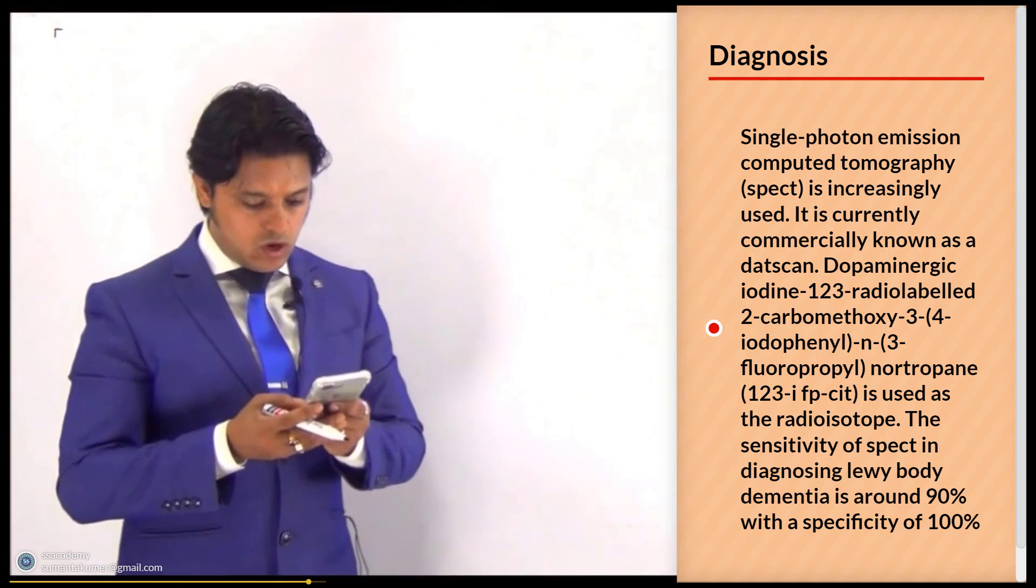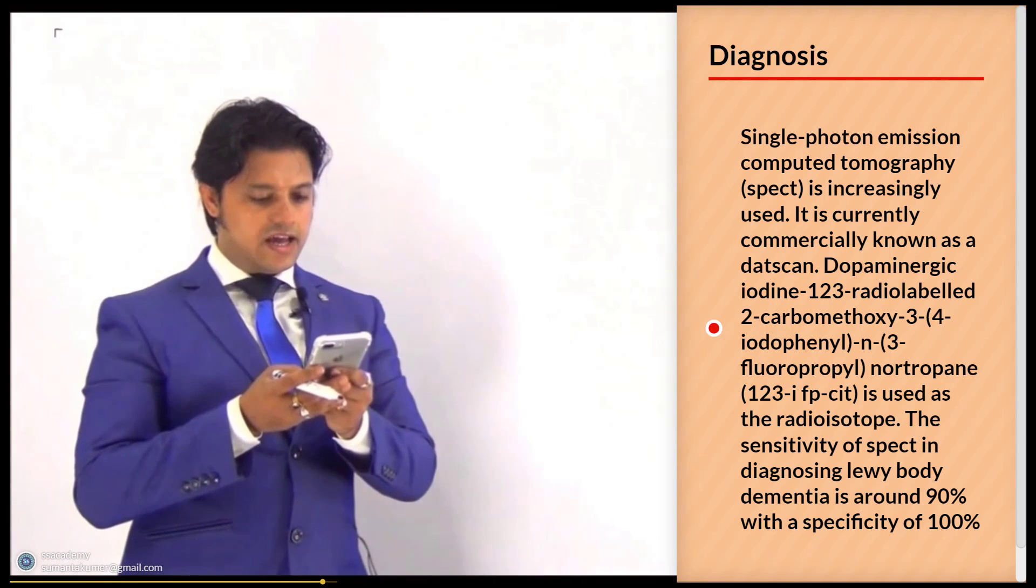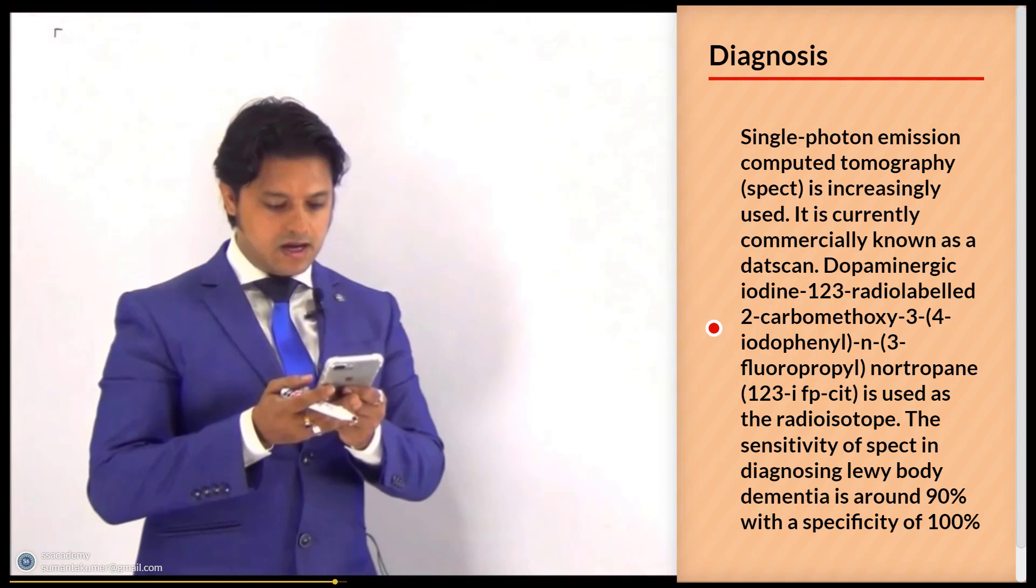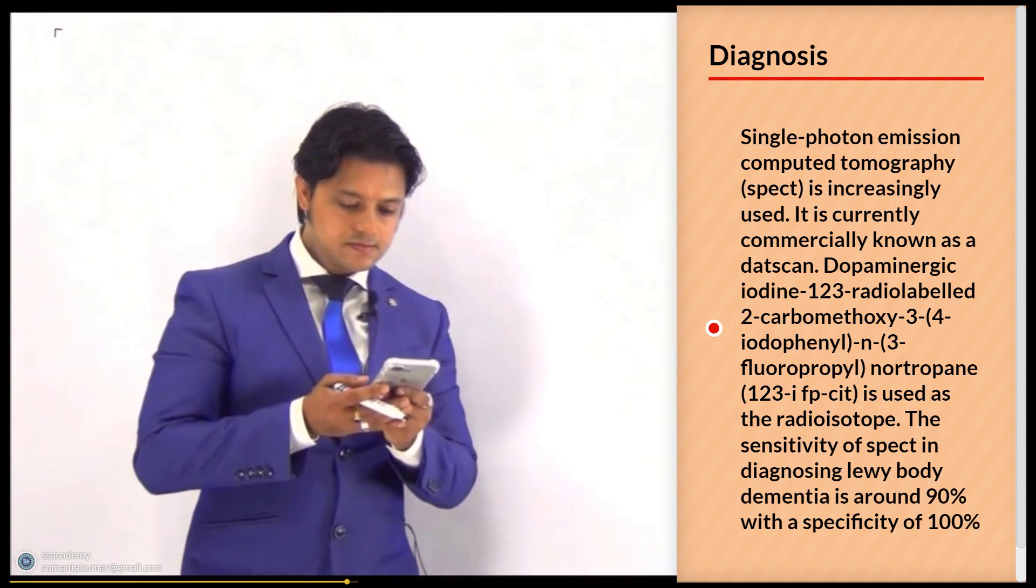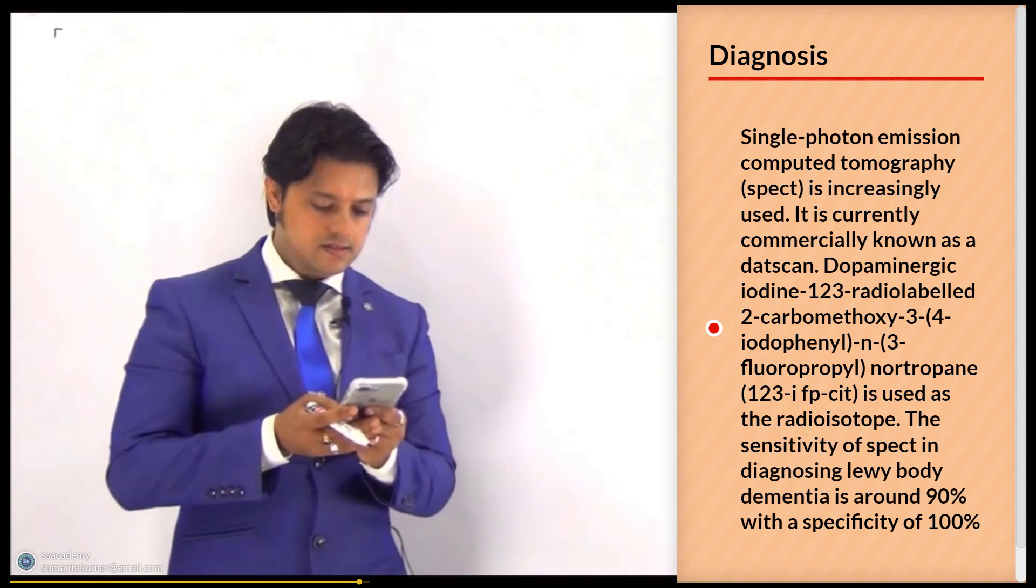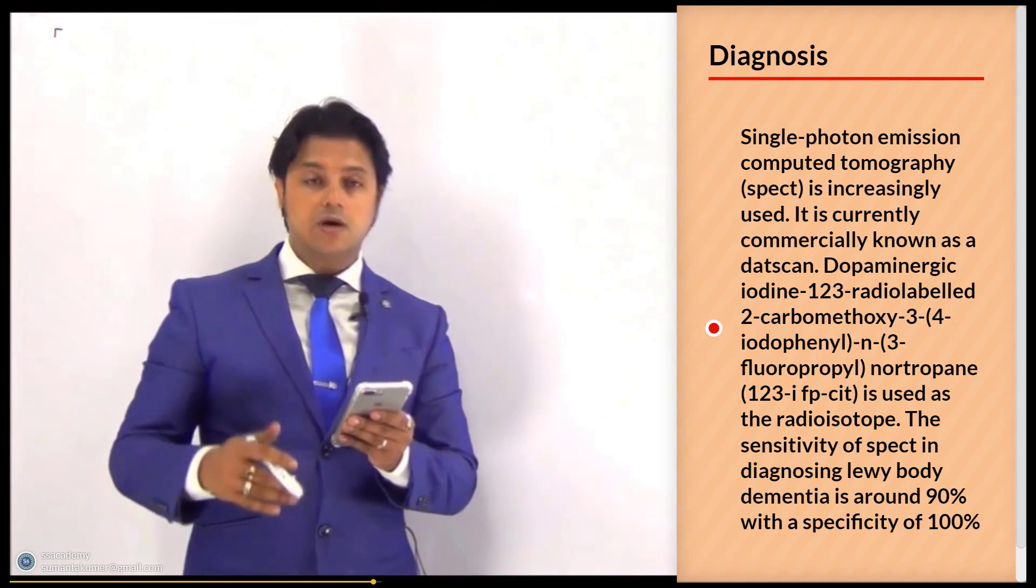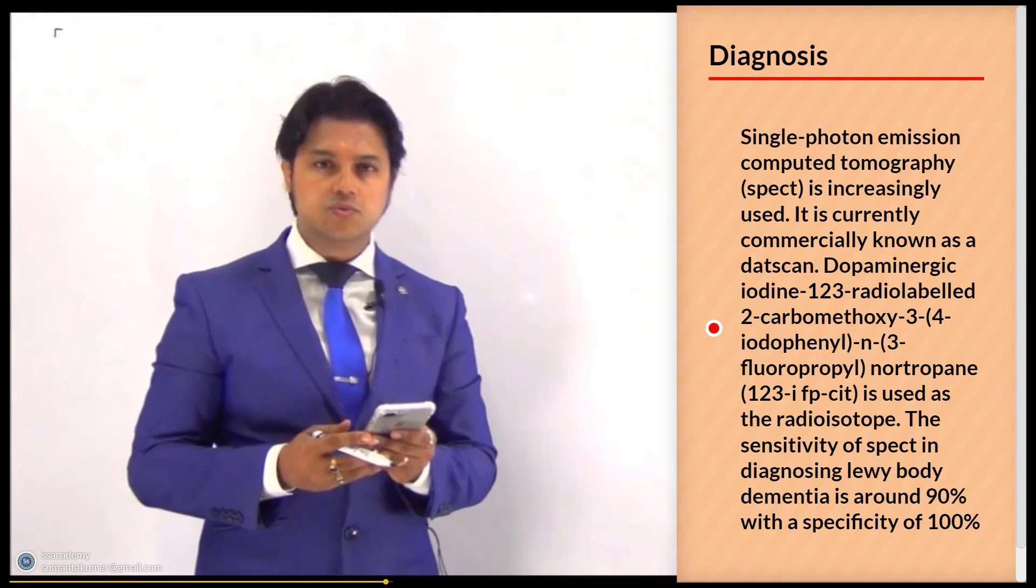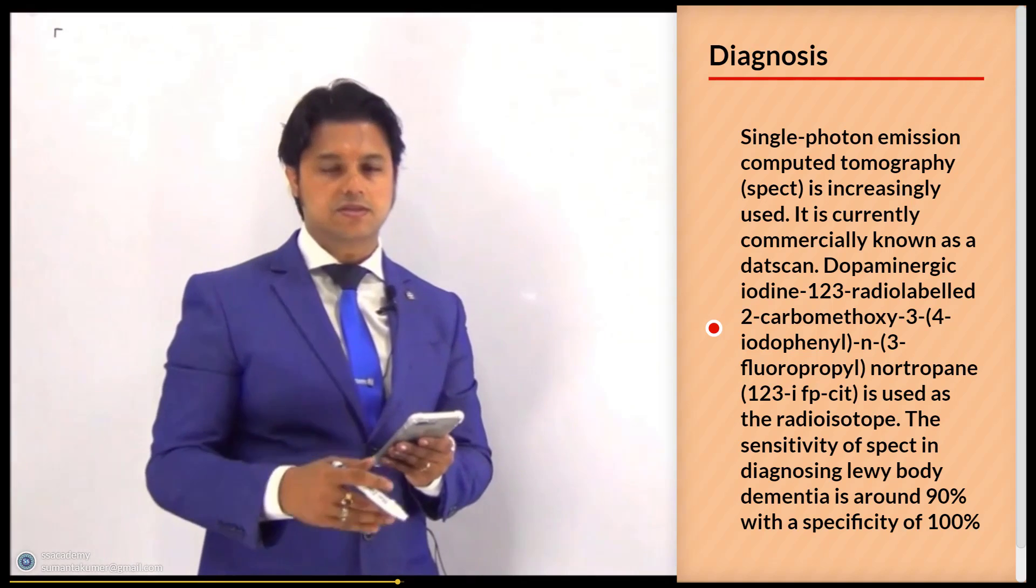Dopaminergic iodine-123 radiolabeled 2-carbomethoxy-3,4-diiodophenyl N-3-fluoropropyl nortropane, that's 123 I-FP-CIT. This is the DAT that's used as a radioisotope, so DAT scan. The sensitivity, you don't need to know the full details of the name. The sensitivity of the FP-CIT in diagnosing Lewy body dementia is around 90% and the specificity is 100%, so DAT scan, circle.